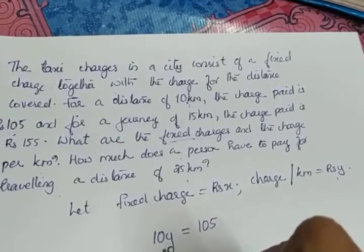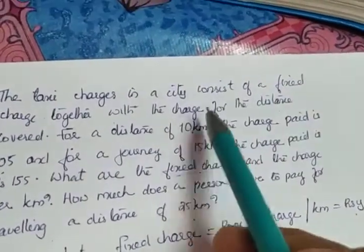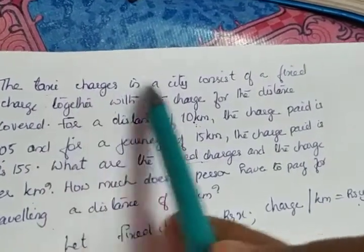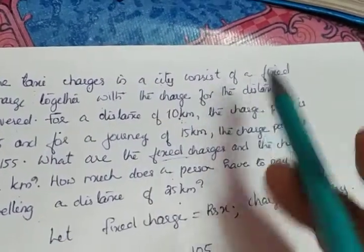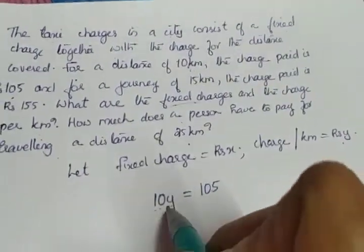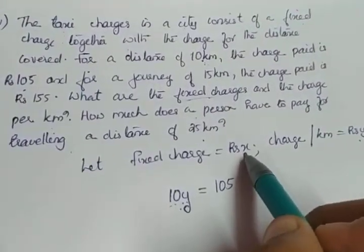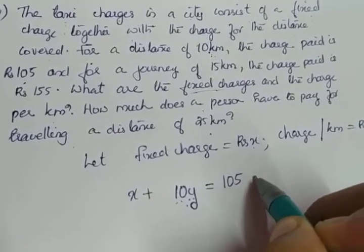But this is not only the fare the taxi driver charges. There is a fixed charge also. The taxi charge in a city consists of a fixed charge together with the charge for the distance. 10y is the charge for the distance covered, and there is a fixed charge which we took as x. So what will be the equation? x plus 10y is equal to 105.